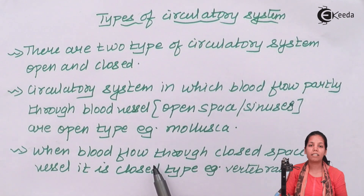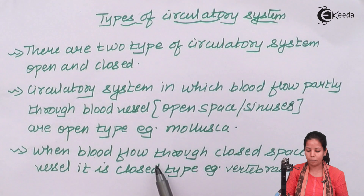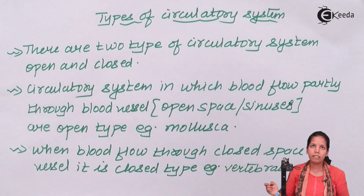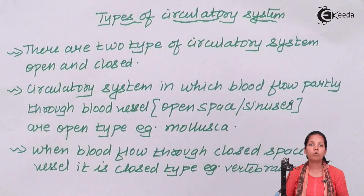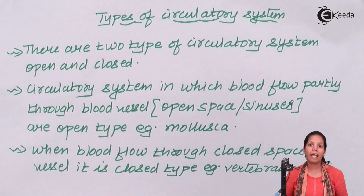The other kind of circulatory system, very predominant and found in vertebrates — human beings being one of them, who have a spinal cord — is the closed circulatory system. In this closed circulatory system, blood flows through closed spaces. When I say closed spaces, I mean that blood flows through the aorta, then through arteries, then through arterioles, then through vena cava, veins, venules, and capillaries. All of them are associated in the blood flow.